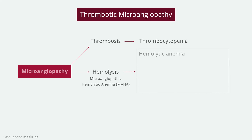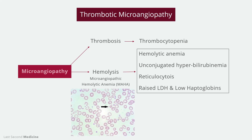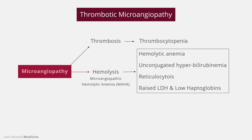As a result, besides anemia, other features of hemolysis will be present, including unconjugated hyperbilirubinemia, reticulocytosis, increased LDH, and reduced haptoglobin. On peripheral film, fragmented RBCs or schistocytes will be found.